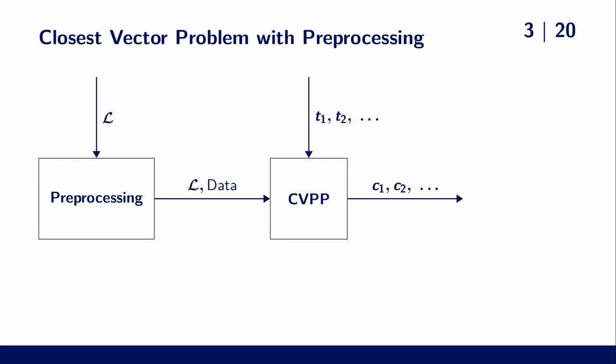The preprocessing phase receives a lattice and outputs some data that the CVP solver can use. In this way, the time complexity per target can hopefully be reduced. This comes often as a trade-off between the size of the preprocessed data and the time complexity per target.